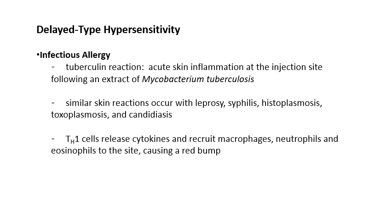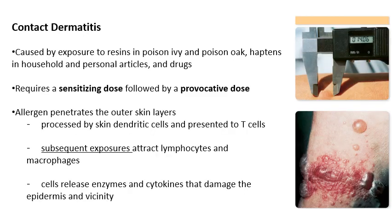Contact dermatitis is a type 4 hypersensitivity. It works similarly to allergic responses in that you need a sensitizing dose followed by a provocative dose. Poison ivy is a good example: your first exposure usually causes no response — that's the sensitizing dose, where your body builds up sensitivity to that toxin. The next time you encounter it is the provocative dose, and that's when you see the contact dermatitis reaction.